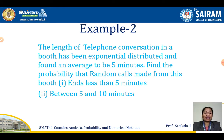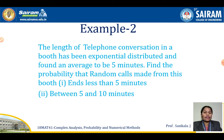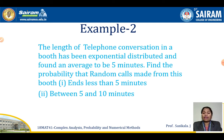Next problem: the length of telephone conversations in a booth has been exponentially distributed with an average of 5 minutes. Find the probability that a random call ends (1) in less than 5 minutes, and (2) between 5 to 10 minutes. Average means 1 by alpha = 5 minutes, so alpha = 1 by 5.